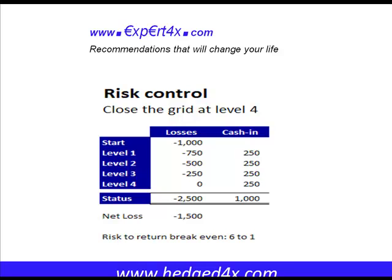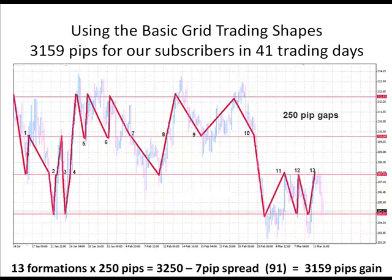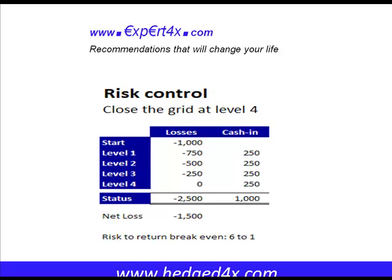Runaway trends are not a major problem for the grid system — you just take the loss. It's only the equivalent of six cash-ins. Looking at a prior example, a 1,000-pip trend was encountered and there was never a danger of a serious problem. The system can actually handle trends of well over 1,000 pips — potentially up to 1,400 or 1,500 — before you cash in negatively. Risk management is very important; our recommendation is that you never go past level four.